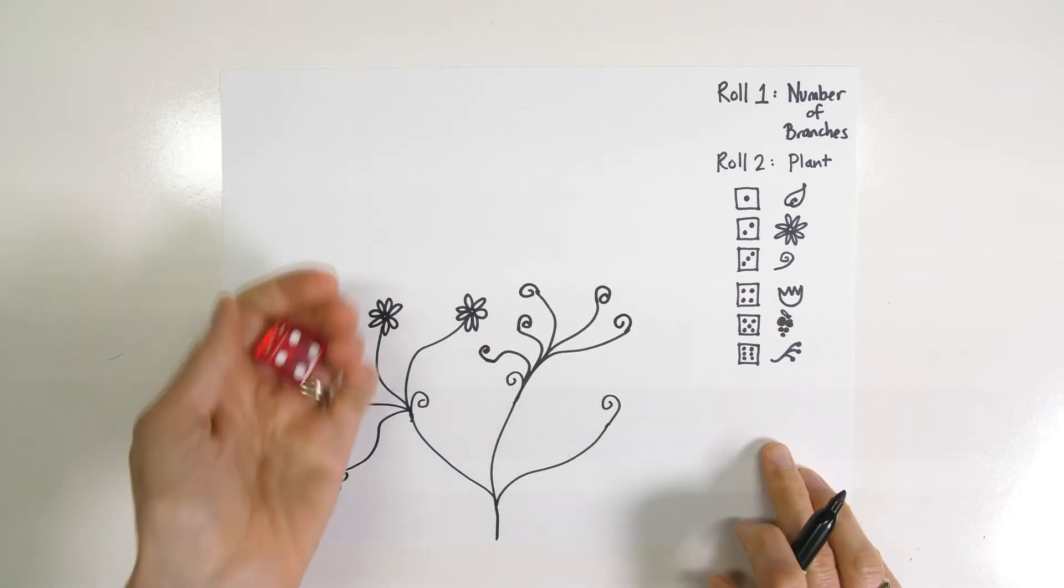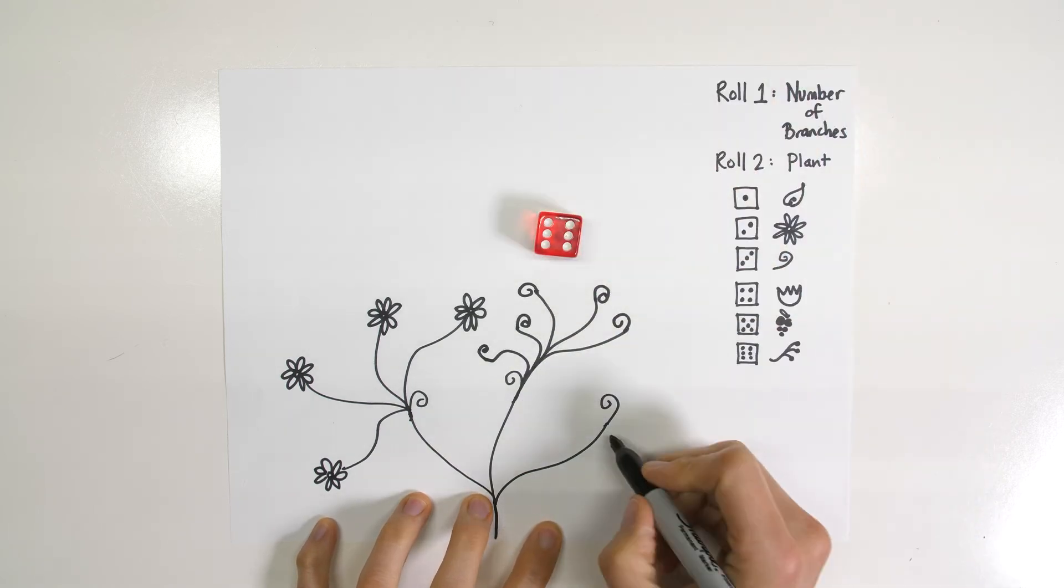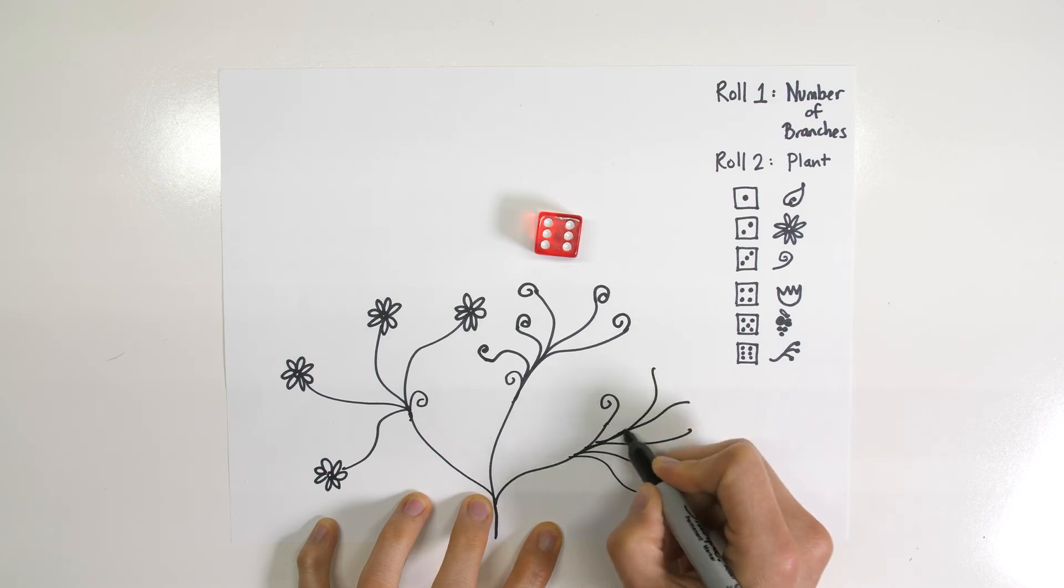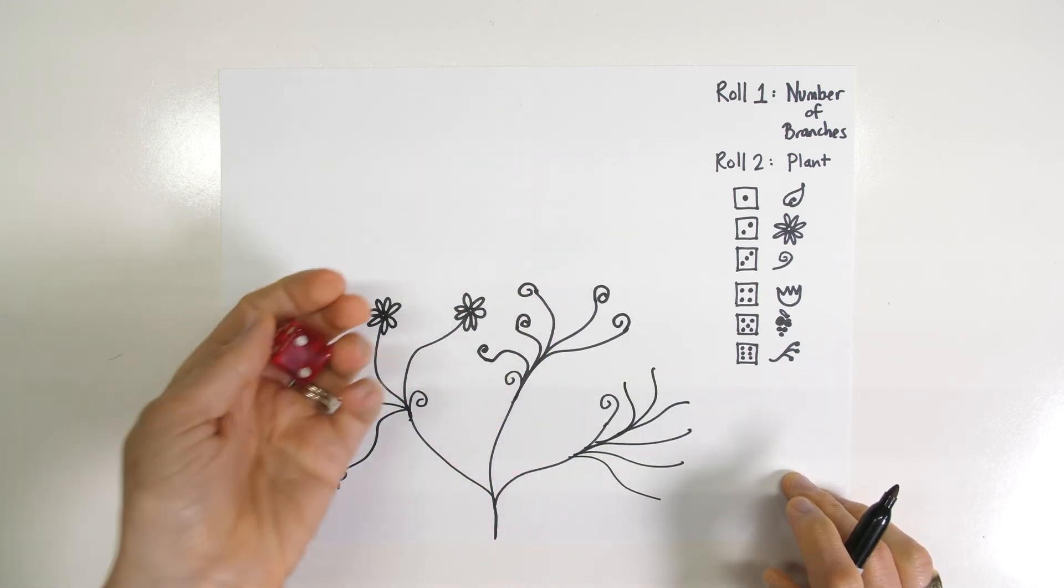And then finally we'll look at this branch. Six. So I'm going to do six branches off of this one. I'm going to go to the side some. And now I'm going to see what kind of leaf.